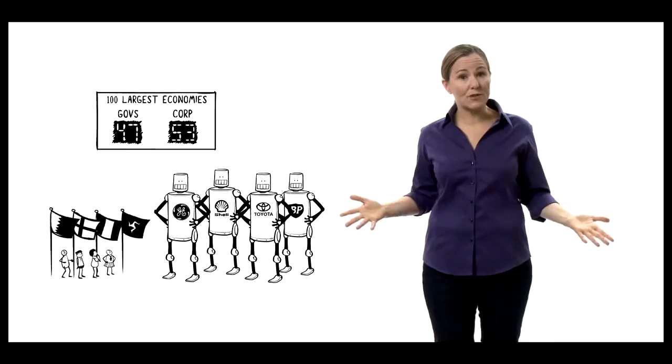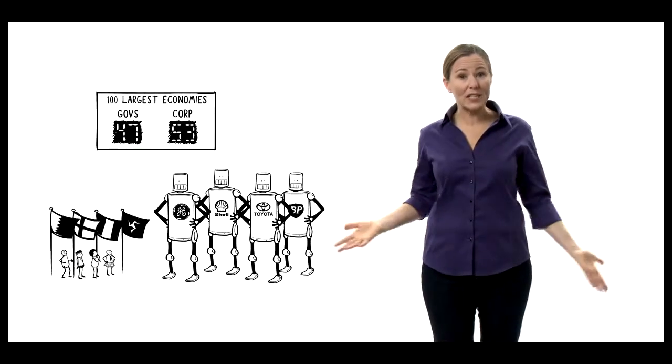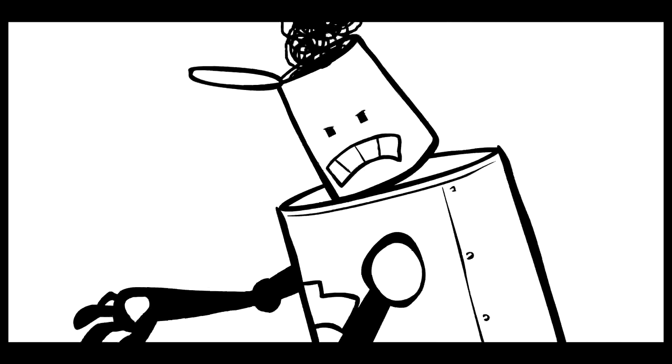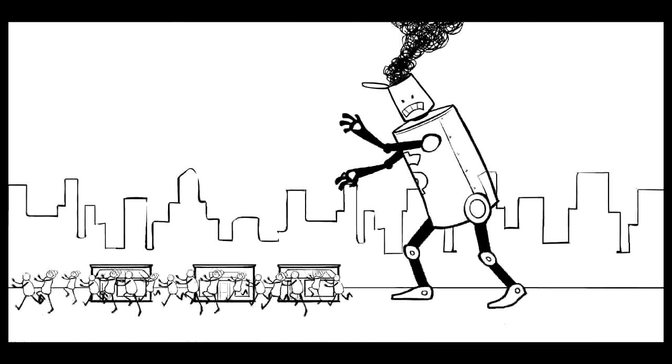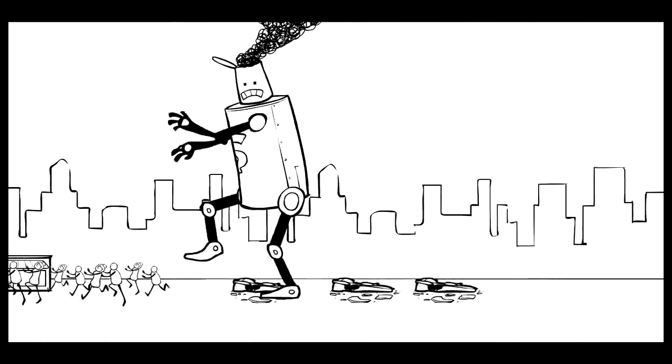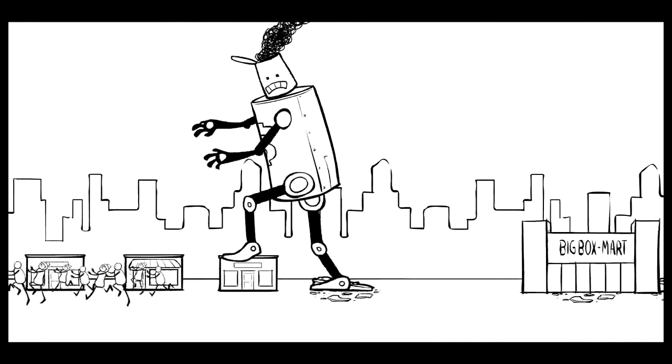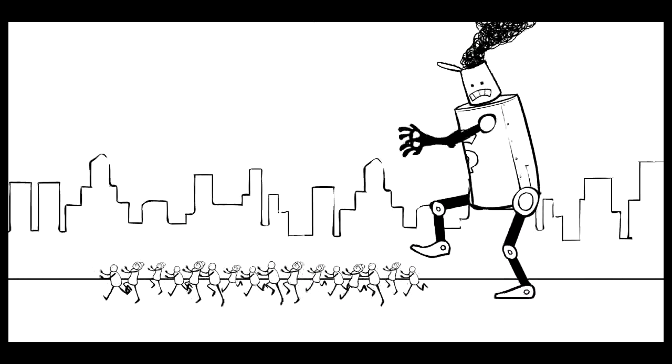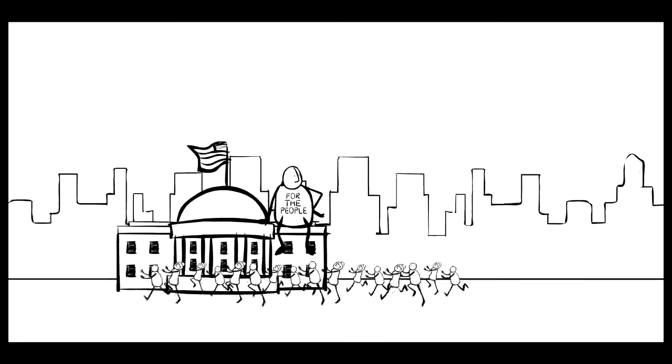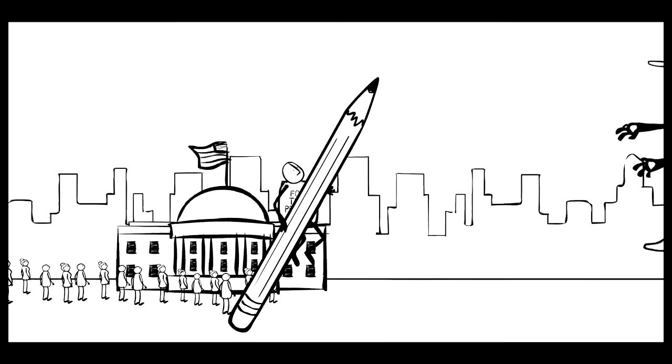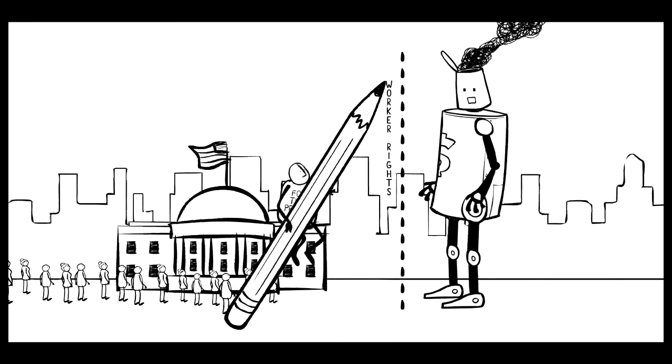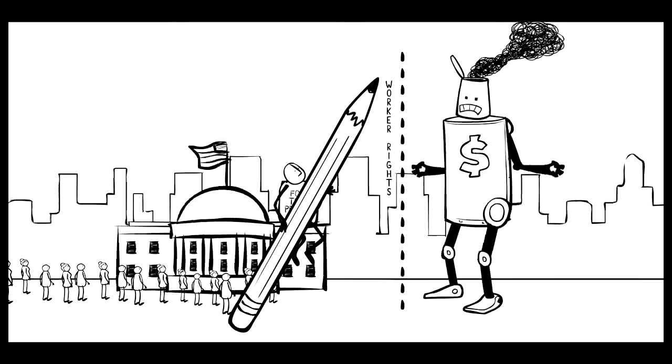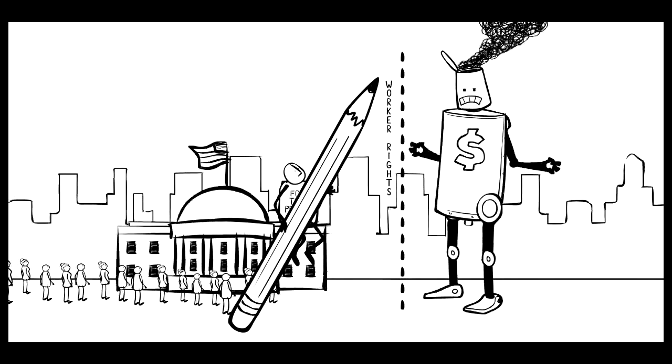Fifty-three of the 100 biggest economies on earth now are corporations. So corporations have a single-minded profit motive, they're humongous, and their owners can easily dodge the blame for any harm they cause. That makes them tricky to share a country with. If we want them to serve us and not the other way around, they need some basic ground rules. And that's where the government comes in. Setting rules to keep things fair and safe and to protect society from corporations run amok.